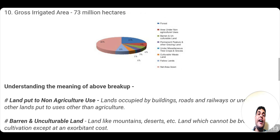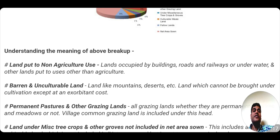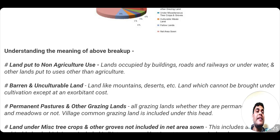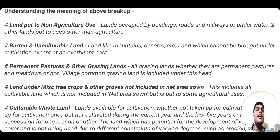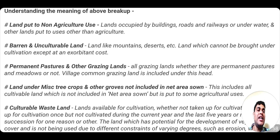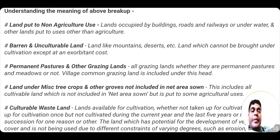Now we are going to understand the meaning of these different heads. First is land put to non-agricultural use — these are lands occupied by buildings, roads and railways, or land which is under water, or other lands put to uses which are not agricultural. Then comes barren and unculturable lands. Barren land includes deserts and very steep mountains where agriculture is not possible. Unculturable land is land which cannot be brought under cultivation, or where an exorbitant cost would be required to convert it — so basically land on which agriculture cannot take place.